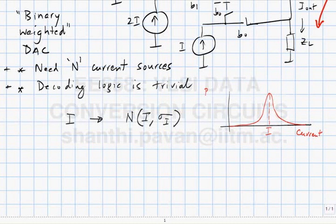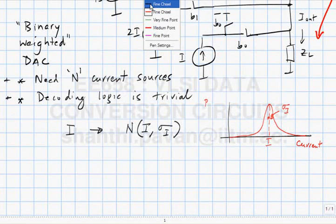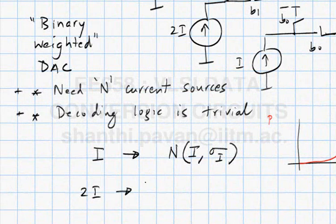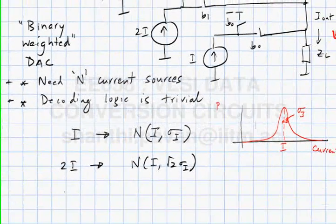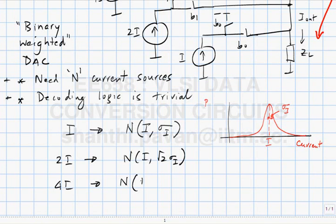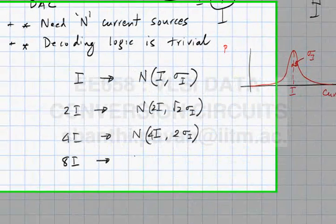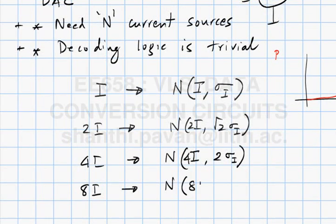If you plot the distribution, it is a Gaussian centered at mean i with width related to sigma_i. The current source 2i will also be a random variable. Its standard deviation will be root(2) times sigma_i — specifically, 2 sigma_i in terms of variance. The 4i source will be a random variable with mean 4i and standard deviation 2 sigma_i, and the 8i source will have mean 8i and standard deviation 2*root(2)*sigma_i.